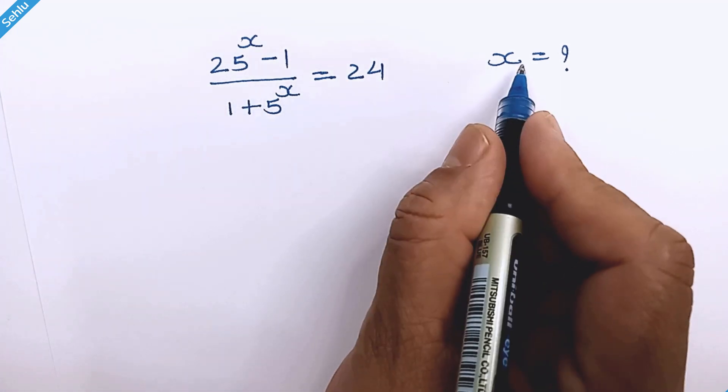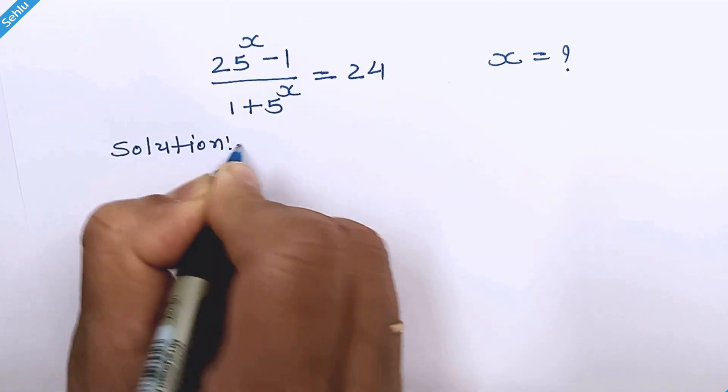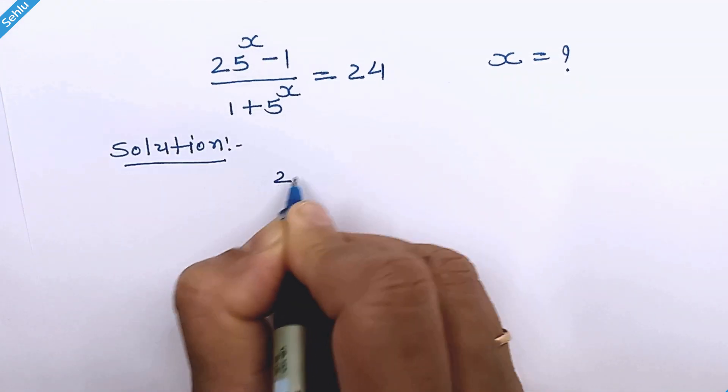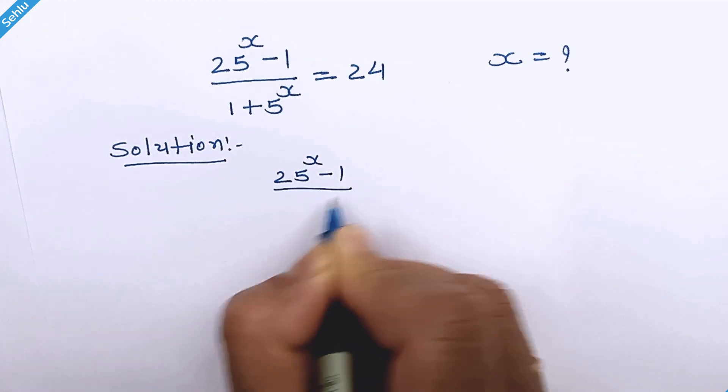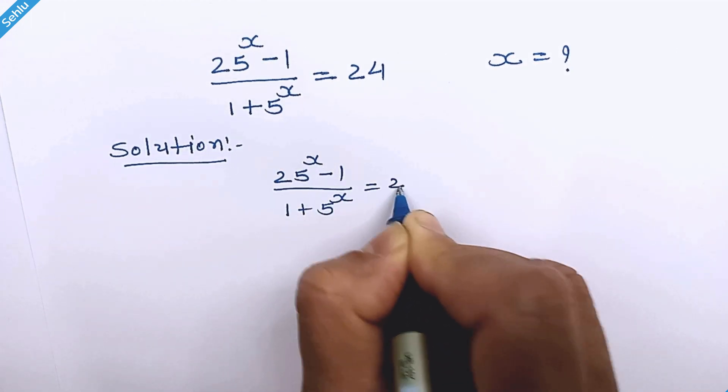Hello friends, let's find the value of x. Let me put the question first. 25 raised to x minus 1 over 1 plus 5 raised to x is equal to 24.